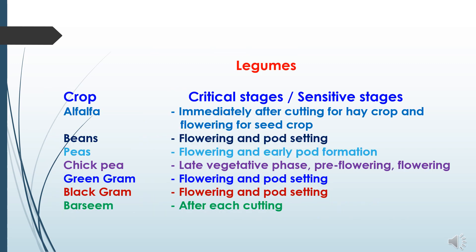Critical stages in legume crops: In alfalfa, the critical stage is immediately after cutting for hay crops and flowering for seed crops. In beans, flowering and pod setting stage. In pea, flowering and early pod formation stage. In chickpea, late vegetative phase, pre-flowering and flowering stages are critical. In green gram, flowering and pod setting. In black gram, also flowering and pod setting stage. In berseem, after each cutting, irrigation is required as those are the critical stages.